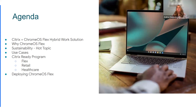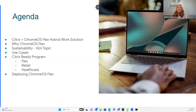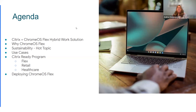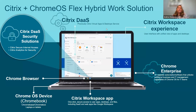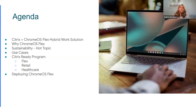Today we're going to cover a couple of things: Chrome OS Flex, the hybrid work solution and how it works with Citrix today, as well as the sustainability pieces. This is a hot topic because there's a lot of misinformation out there. We want to help you understand how you can repurpose old devices, save your companies money, and help the environment. We'll also talk about use cases, the Citrix Ready program, and show you how to deploy Chrome OS Flex.